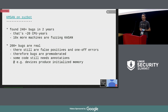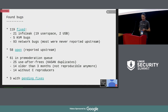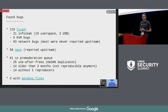For example, KASAN uses 10 times more machines. 200 bugs out of those are real. There are still false positives and non-reproducible errors, but we don't report them to upstream developers. Out of those 200 bugs, 119 have been fixed already. There were 21 infoleaks, 5 KVM bugs, and almost 100 networking bugs.